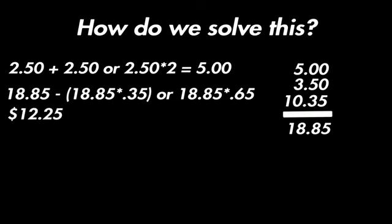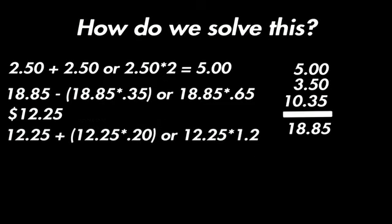Now let us move on to the tip and the equation for that is $12.25 plus $12.25 multiplied by 0.20. Or you can do $12.25 multiplied by 1.2 because we can just add that 20% to the 100% that we already had. This would give us $14.70.